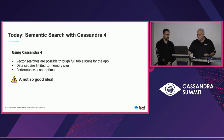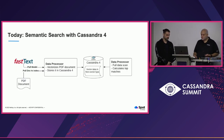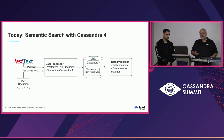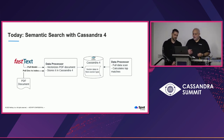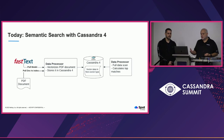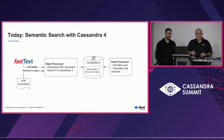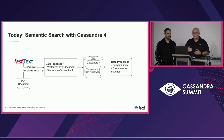The current Cassandra 4 approach involves a data processor that downloads the data model, loads the file you want to vectorize, vectorizes the data, and stores it in Cassandra in a non-vector column — text or something else. To run a query, the data processor does a full table scan, performs ranking of matches, and presents results to the customer. All the ranking workload is on the application, causing memory and performance issues.